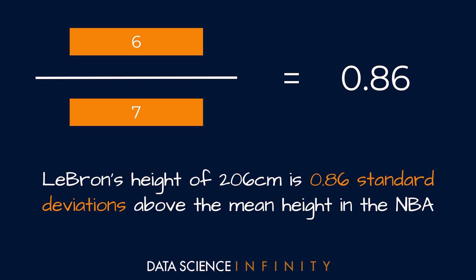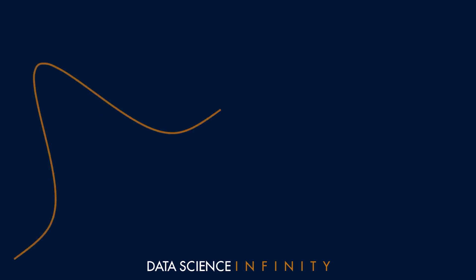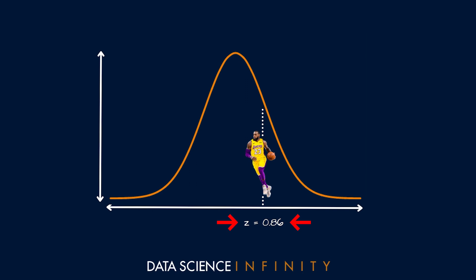A couple of quick notes before we move on. In a case where a player was shorter than the mean height, this would all still work — we'd just be subtracting the mean of 200 centimeters from a smaller number, giving a negative result, telling us how many standard deviations that height was below the mean. Also, this value of 0.86 is known in the world of normal distribution as a z-score — keep that name in mind as we progress through this series.